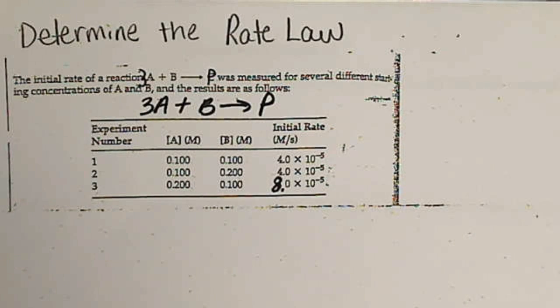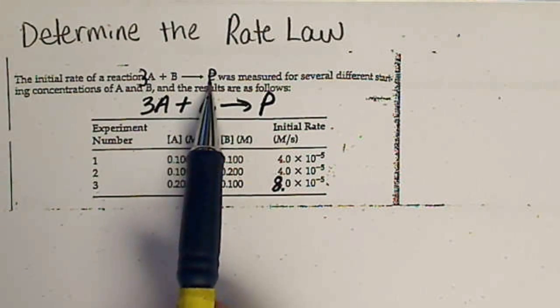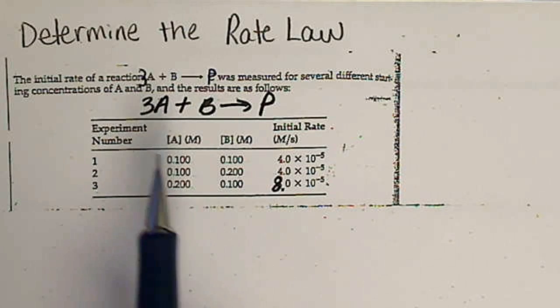We're going to use this table to determine a rate law and the balanced equation. I made a mess of it up here, but I've rewritten it here.